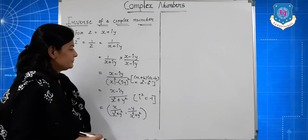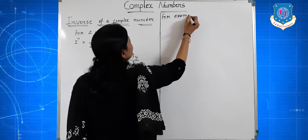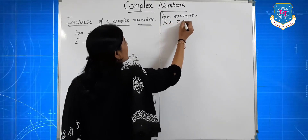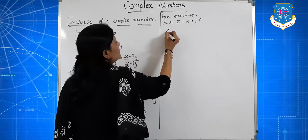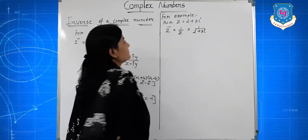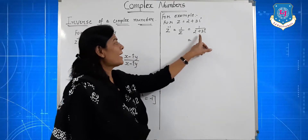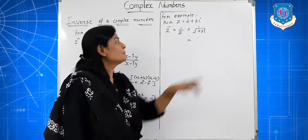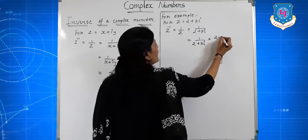We can also easily find this using the formula directly. For example, for z equal to 2 plus 3i, z inverse is equal to 1 upon z, which is equal to 1 upon 2 plus 3i. Now multiply and divide by the conjugate of 2 plus 3i. The conjugate of 2 plus 3i is 2 minus 3i, so we multiply and divide by 2 minus 3i.